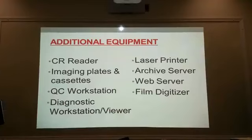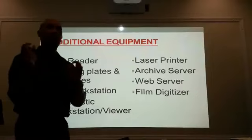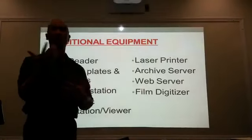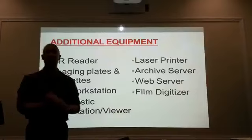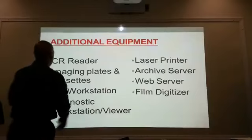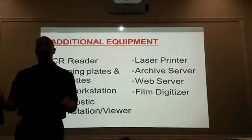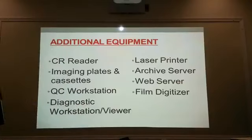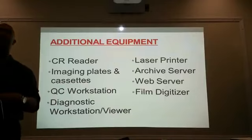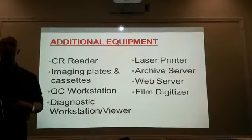Additional equipment that we may need includes more readers. Our readers only do one plate at a time, which is fine for a controlled classroom environment. We also need more imaging plates and a workstation for us to manipulate our images. The images come up and now we can do things to them — enlarge, shrink, flip, reverse a negative image to a positive image, crop, sharpen, adjust brightness and contrast. It's like Photoshopping.